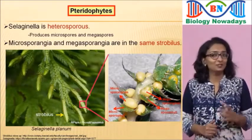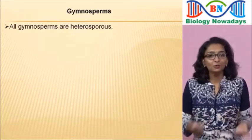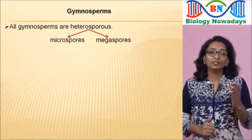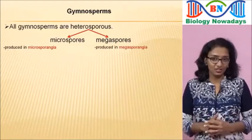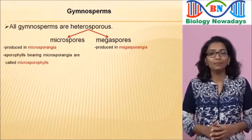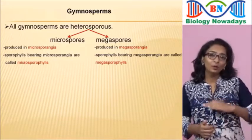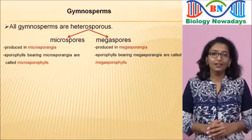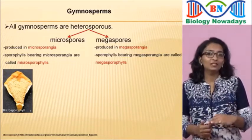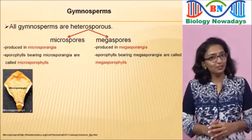Now let's move on to the gymnosperms. All gymnosperms are heterosporous — they produce two types of spores: microspores and megaspores. Microspores are produced in microsporangia and megaspores are produced in megasporangia. Sporophylls bearing microsporangia are called microsporophylls and those bearing megasporangia are called megasporophylls. Microsporangia are seen on the lower side of the microsporophyll. Here is a microsporophyll of the Cycas tree — you can see the lower side with microsporangia.